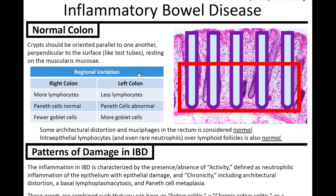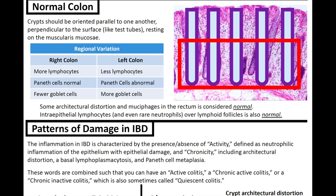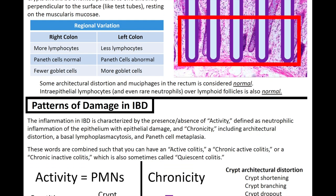Some architectural distortion and mucophages in the rectum are considered normal. Intraepithelial lymphocytes and even rare neutrophils over the top of lymphoid follicles seen throughout the colon are also considered normal.